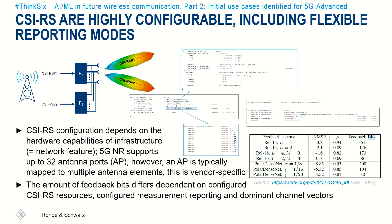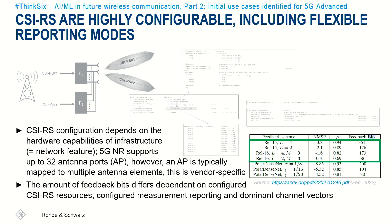The physical layer specification foresees several configurations depending on the number of antenna ports used, and allows different mappings of CSIRS to the time-frequency grid. As a result, this leads to a varying number of feedback bits depending on the configured CSIRS resources, the reporting modes, and most importantly, the conditions on the radio channel and the number of dominant vectors.